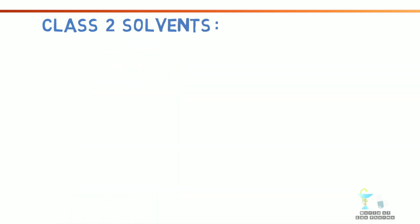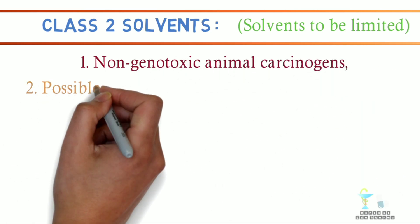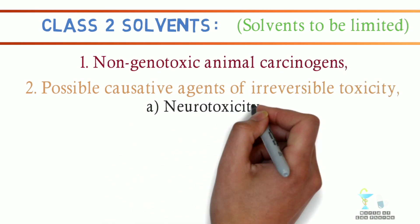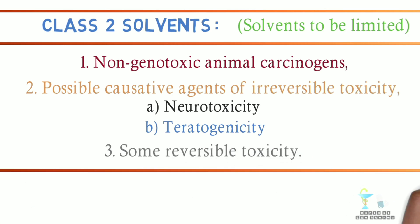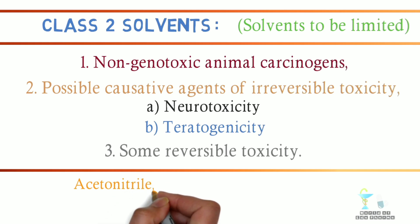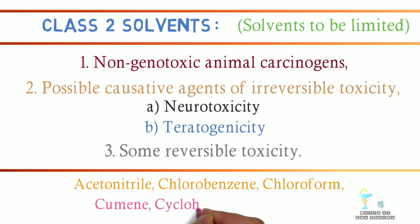The next is Class 2 solvents, which are solvents to be limited. Class 2 solvents are non-genotoxic animal carcinogens, or possible causative agents of irreversible toxicity such as neurotoxicity or teratogenicity, and also includes some reversible toxicity. Examples of Class 2 solvents are acetonitrile, chlorobenzene, chloroform, cumene, cyclohexane, toluene, etc. These solvents are associated with less severe toxicity and should be limited in order to protect patients from potential adverse effects.